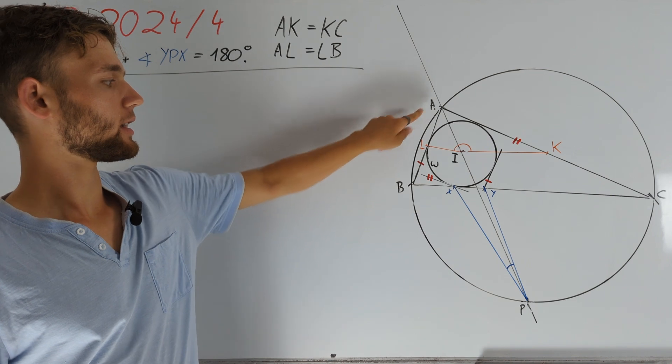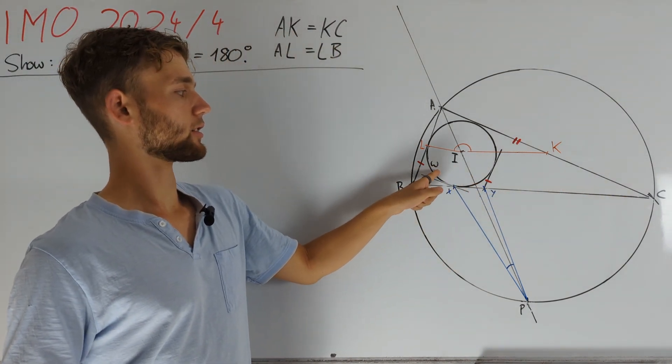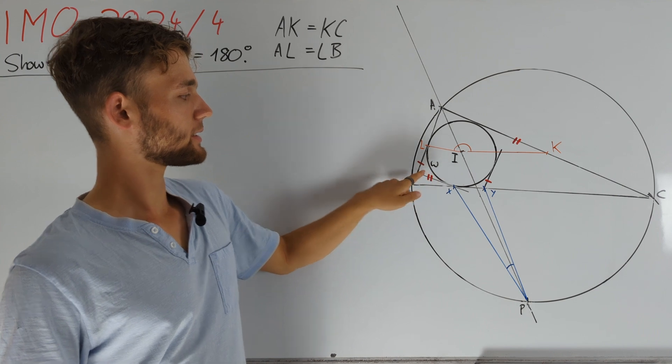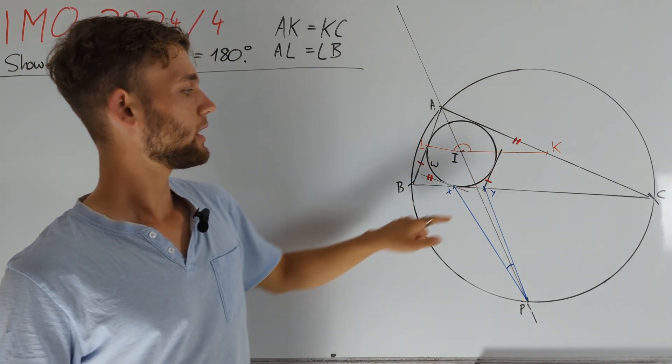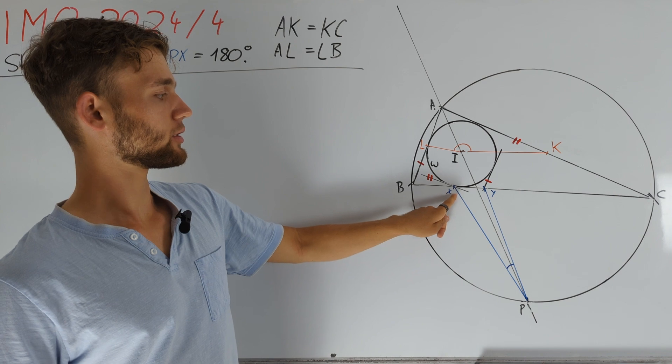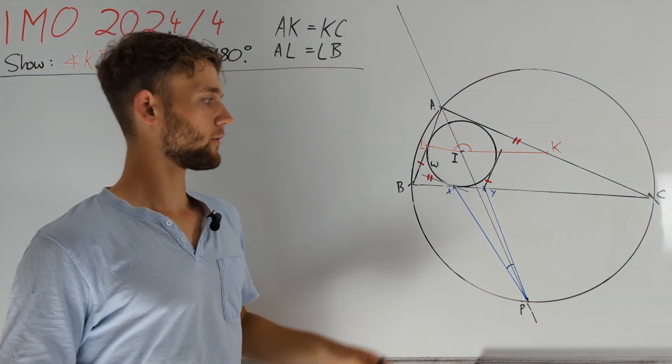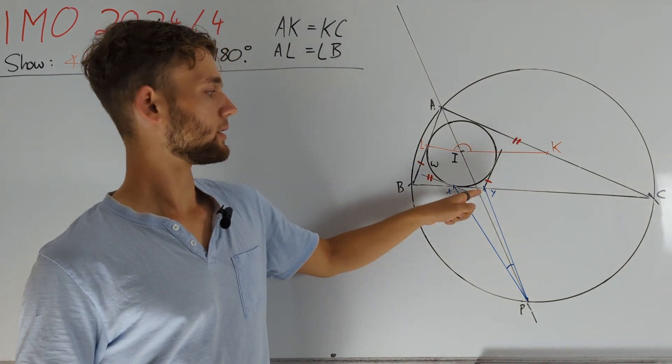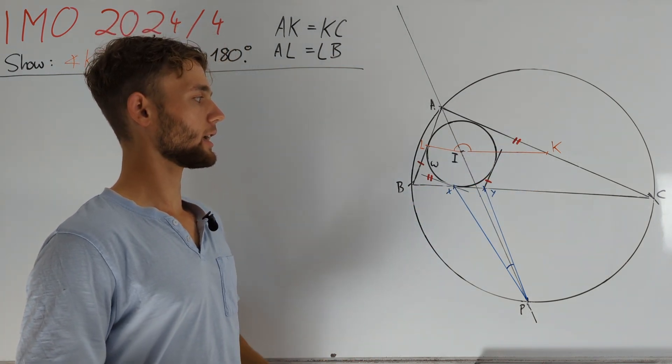We have given a triangle ABC with incenter I and incircle omega. We consider the second tangent to omega that is parallel to AC and denote its intersection with side BC with X. Similarly, Y is the intersection of BC with the second tangent of omega that is parallel to side AB.